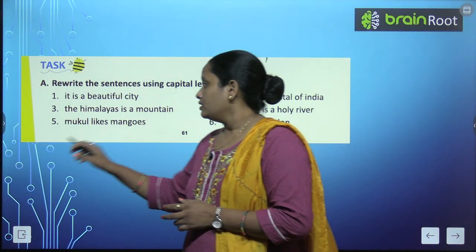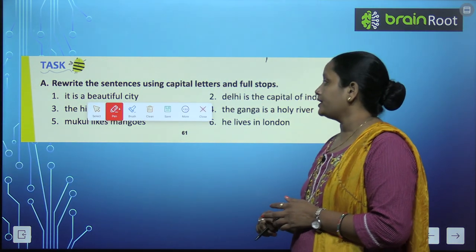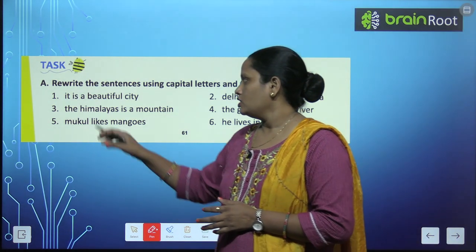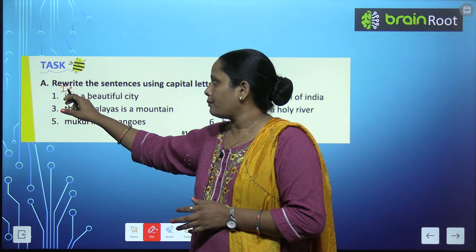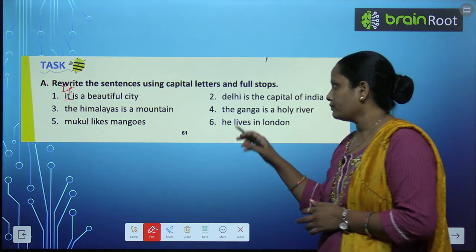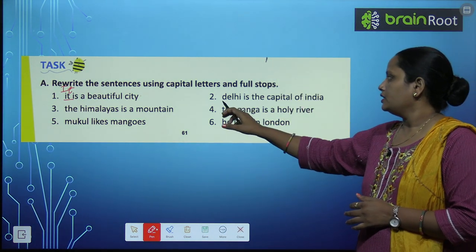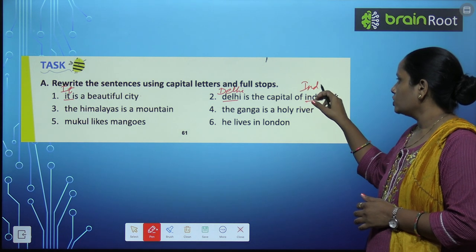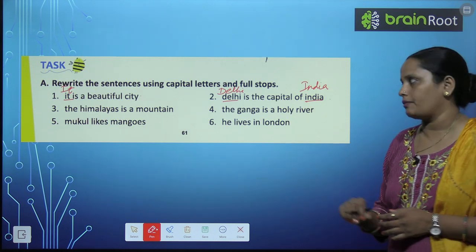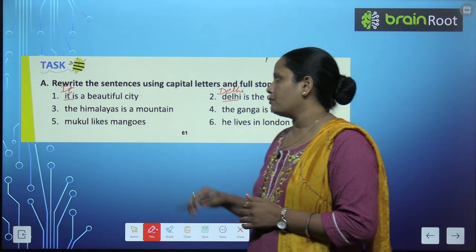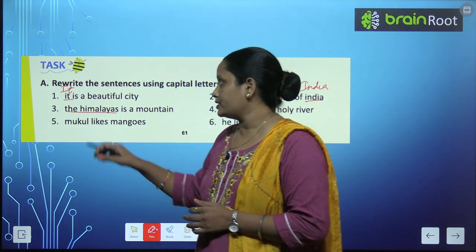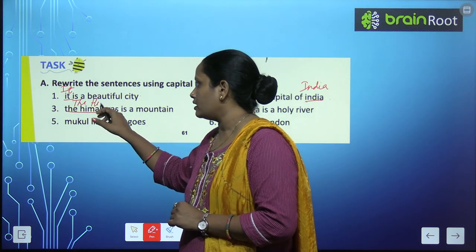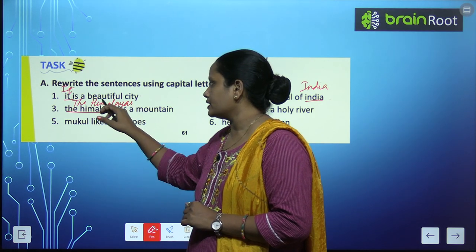Now let's do this exercise: Rewrite the sentences using capital letter and full stop. Capital letter से start करना है sentence को, full stop पे खत्म करना है. "It is a beautiful city" — it का I capital और city के बाद full stop. "Delhi is the capital of India" — Delhi का D capital और India का I capital क्योंकि India भी एक special name है, और last में full stop. "The Himalayas is a mountain" — द से sentence start हो रहा है तो T capital, और Himalayas एक special name है तो H capital.